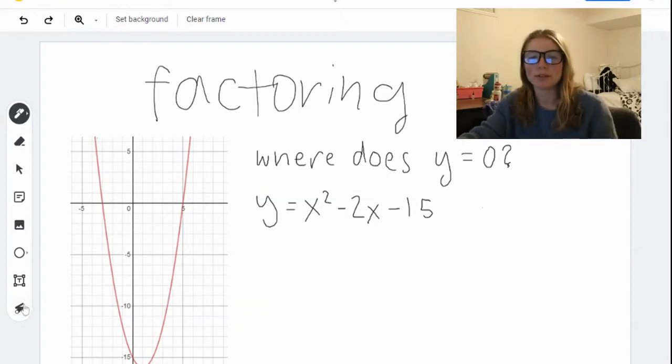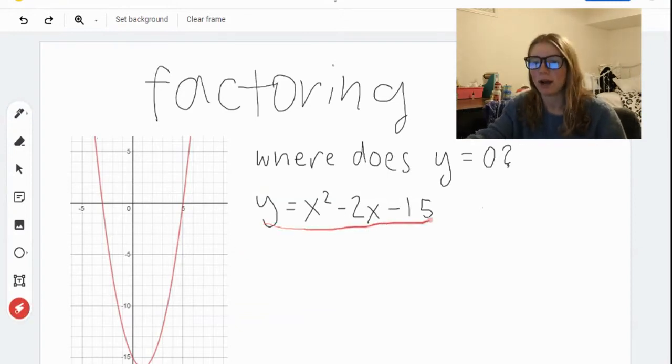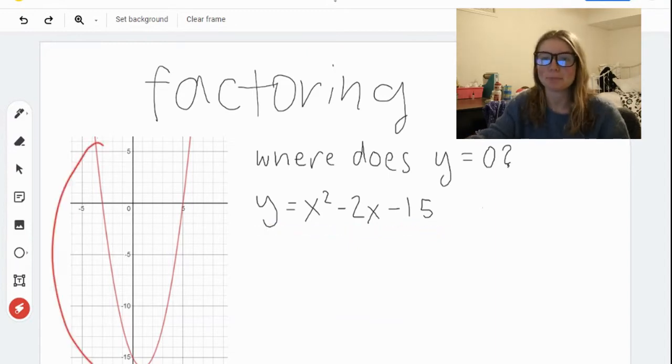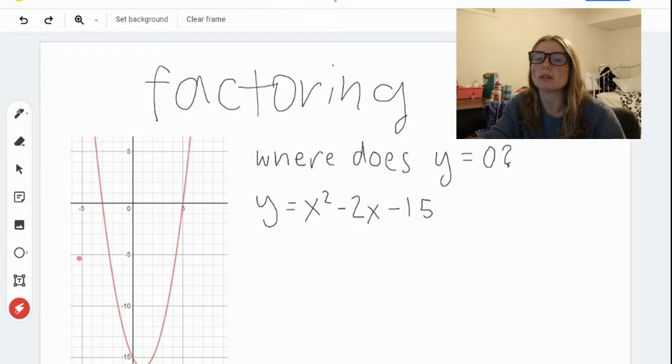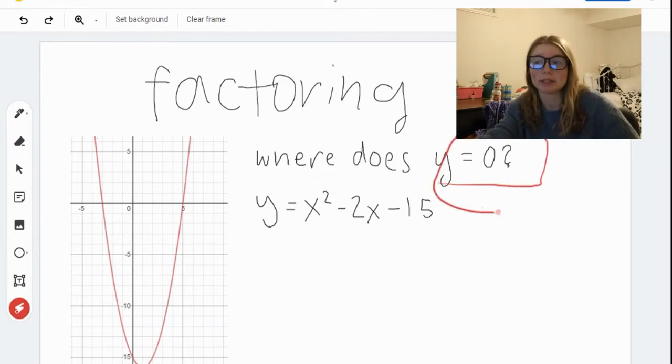So over here, we've got the graph of y equals x squared minus 2x minus 15. You can see the graph here. Now, factoring is pretty much asking the question, where does y equal 0?